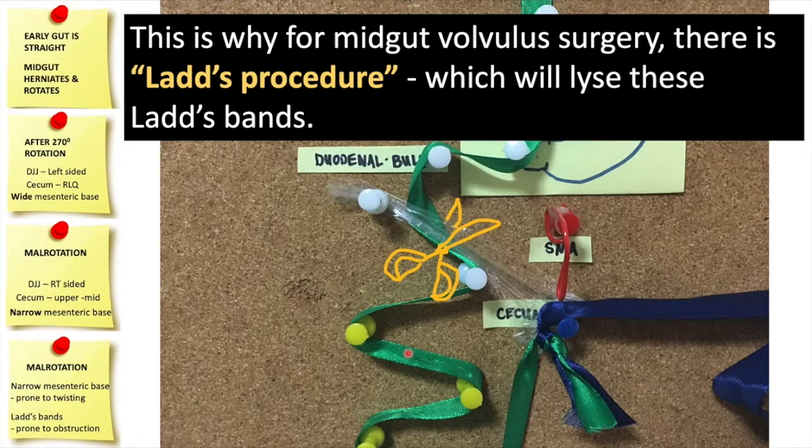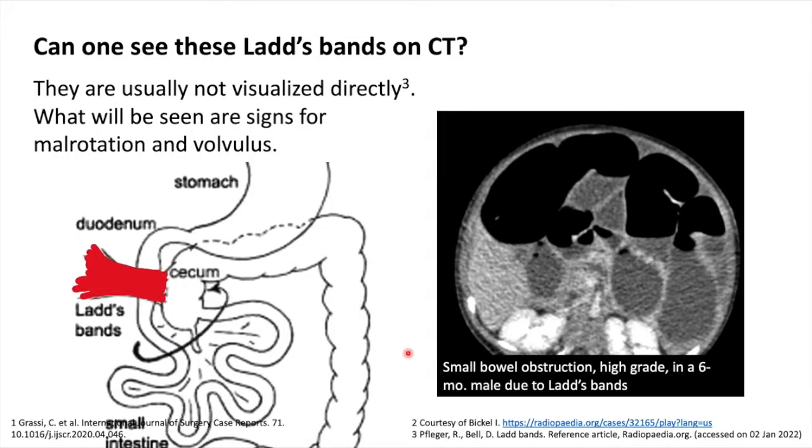These peritoneal bands are called Ladd's bands. This is why for mid-gut volvulus surgery, there is Ladd's procedure which will lyse these Ladd's bands. Now, can we see these Ladd's bands on CT?